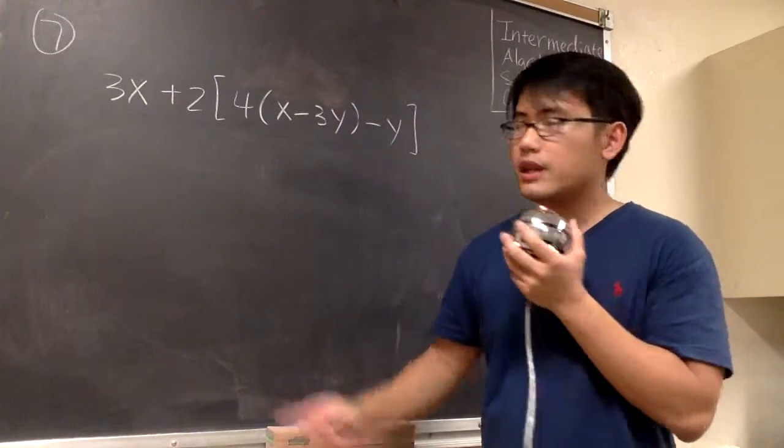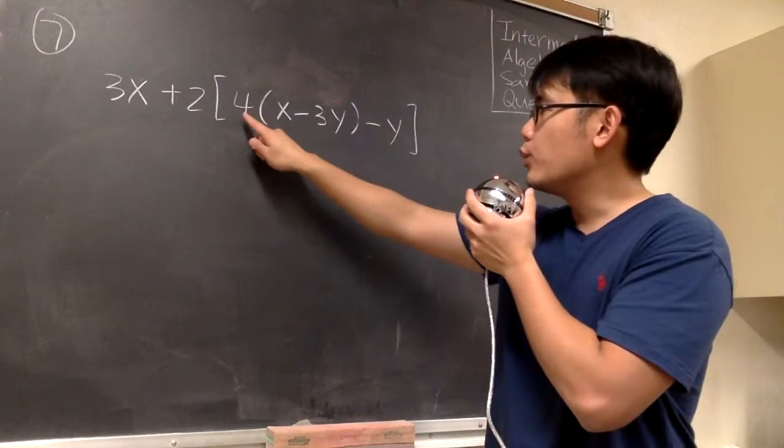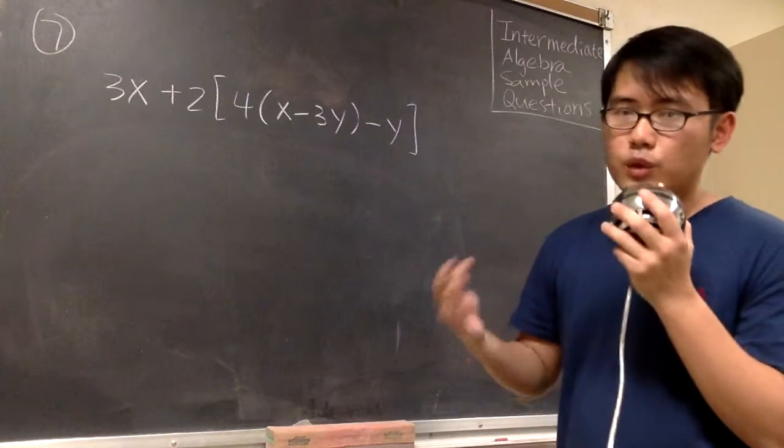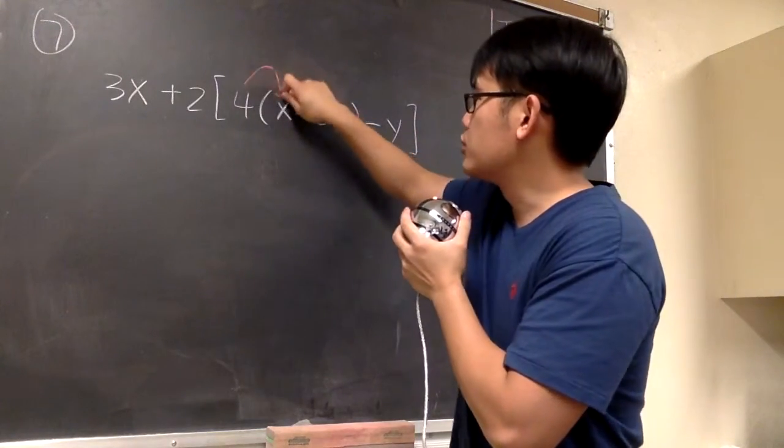We have to do this inside out, and the bracket is just like the parentheses. Inside of the bracket, we have 4 in front of this parentheses. So what we have to do first is to distribute the 4 into the parentheses. And let me just draw the arrows.